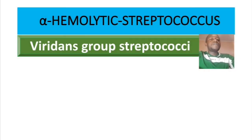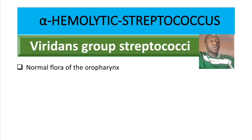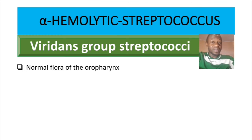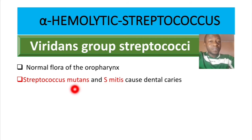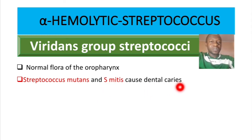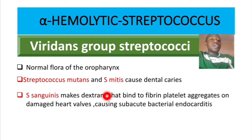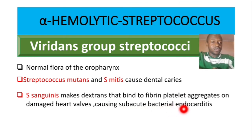Now let's talk about the viridans group streptococci. These bacteria are part of the normal flora of the oral pharynx — remember that Streptococcus pneumoniae is part of the normal flora of the nasopharynx. Streptococcus mutans and Streptococcus mitis — both starting with M — are found in the mouth and cause dental caries. Streptococcus sanguinis makes dextrans that bind to fibrin-platelet aggregates on damaged heart valves, causing subacute bacterial endocarditis.